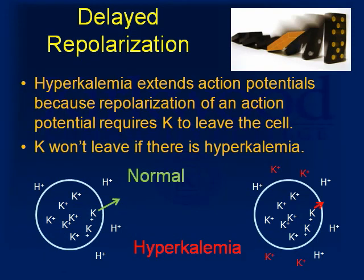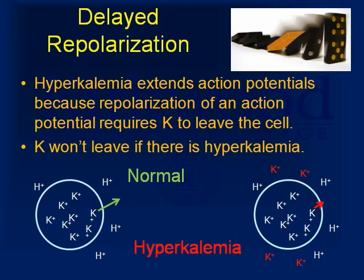Hyperkalemia extends action potentials. An action potential is when a cell changes its voltage from negative up to positive and then back down to negative — a very good way to signal using electricity. Part of the requirement is that potassium has to leave the cell, because potassium is positively charged, and when it leaves it takes its positive charge with it, making the inside of the cell negative again. If there's already a lot of potassium outside the cell, the potassium inside simply doesn't want to leave by diffusion, and the voltage cannot return back down to negative. So you can depolarize the cell, but it makes it difficult to repolarize.